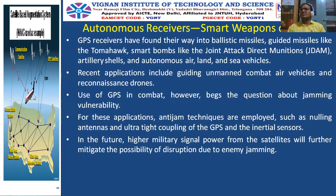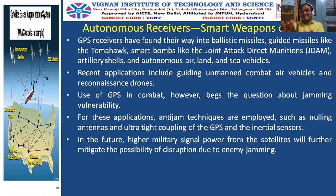Whenever a GPS receiver is jammed, it can apply its own nulling techniques to jam enemy targets. Anti-jam techniques applied include nulling antennas and ultra-tight coupling of GPS with inertial sensors. Inertial sensors onboard will sense incoming enemy targets, and when tightly coupled with a GPS receiver, they can find and nullify enemy signals. In the future, higher military signal power from satellites will further mitigate disruption due to enemy jamming.